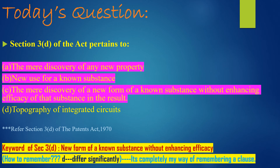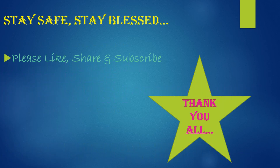I am telling you one thing — listen carefully, friends. Section 3, Clause D says: for the purposes of this clause, Esters, Ethers, Polymorphs, Metabolites, Pure form, Particle Size, Isomers, Mixtures of Isomers, Complexes, Combinations and Other Derivatives of Known Substance shall be considered to be the same substance, unless they differ significantly in properties with regard to efficacy. That means when they differ significantly with respect to efficacy, they can be patentable. Otherwise, not.